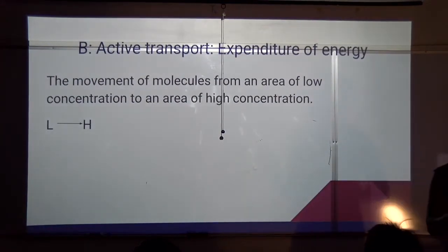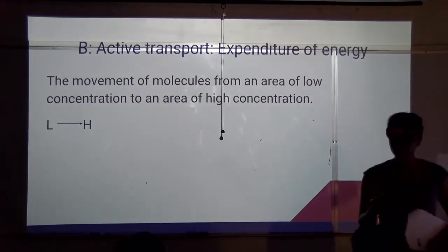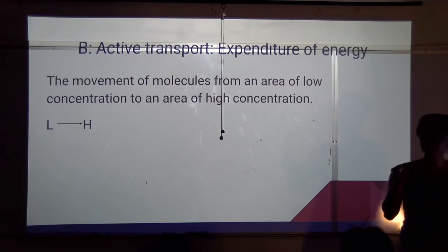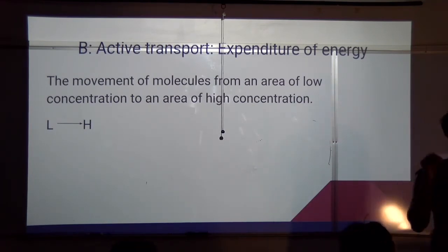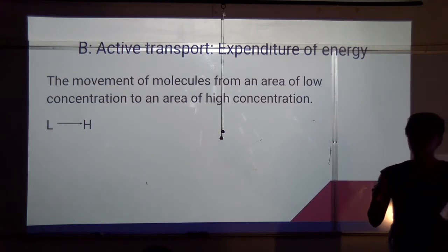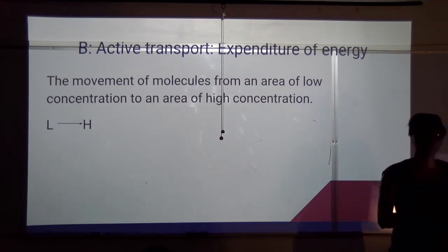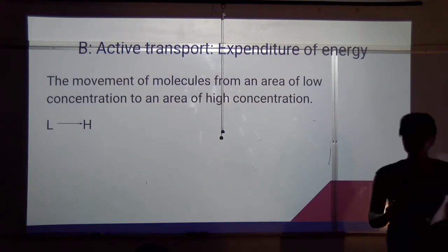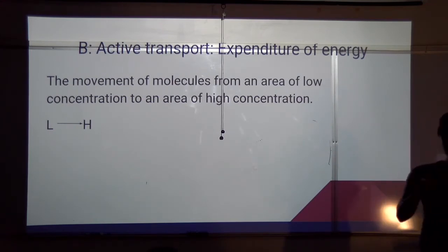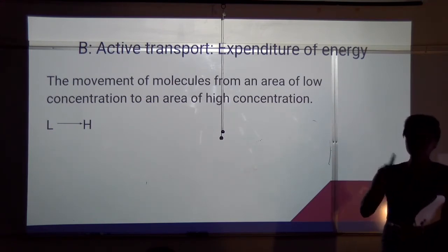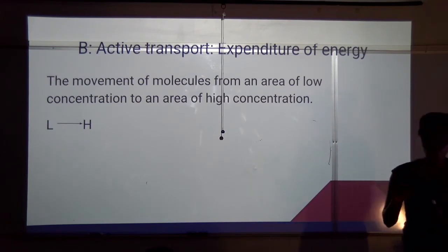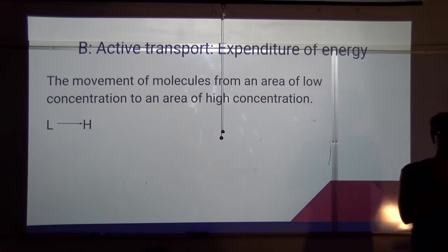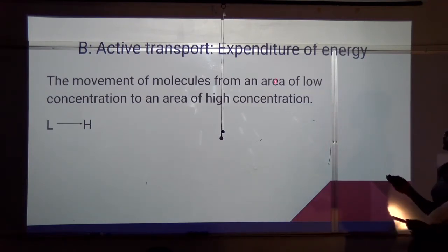Active transport is the opposite of passive transport. Going back to the bike analogy: coasting downhill requires no energy, like diffusion moving from high to low concentration. But going uphill from the lowest point to the highest requires energy — that's active transport. To go against the concentration gradient, from low to high concentration, energy is required.